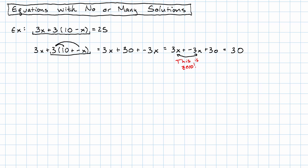Our simplified equation, then, is 30 equals 25. Is there anything that we could make x to make 30 equal 25? No.